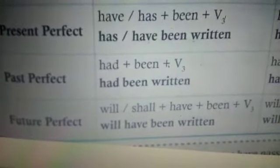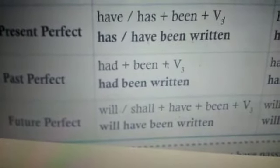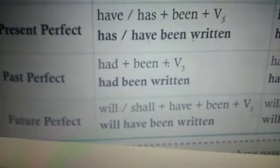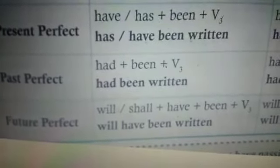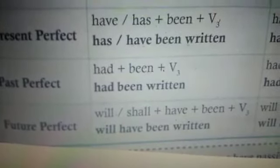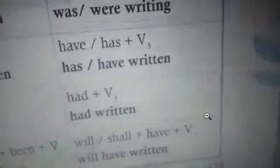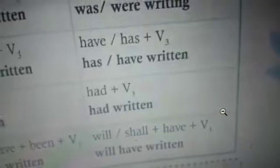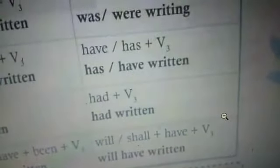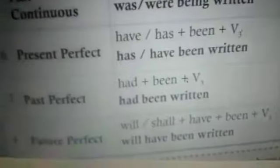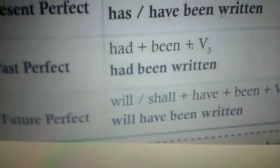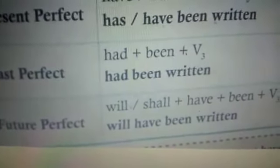Coming to the seventh one — past perfect: 'had' is used for both singular and plural, plus 'been' plus verb 3 — so 'had been written.' When it changes into active voice it becomes 'had' plus verb 3 — 'had written.'